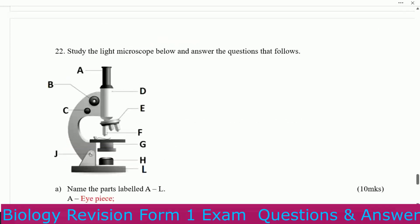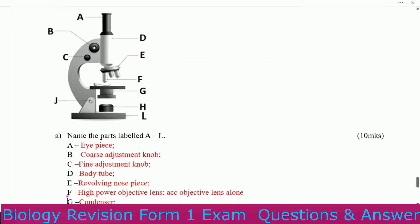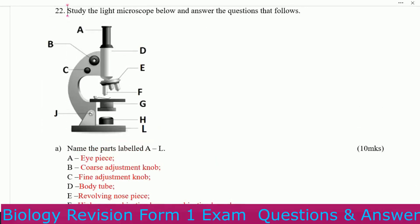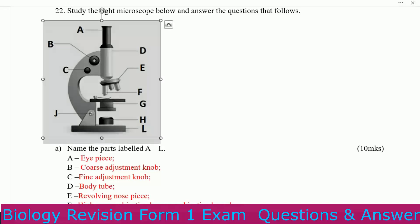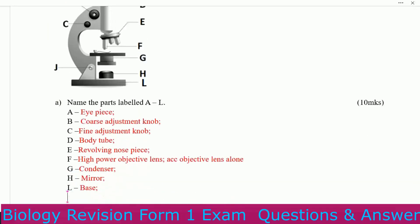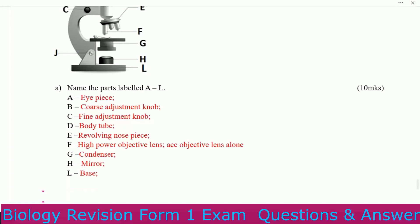Study the light microscope below and answer the questions that follow. You can see it here very clearly. Name the parts labeled A to L. A is eyepiece. B is coarse adjustment knob. C is fine adjustment knob. D is body tube. E is revolving nosepiece. F is eyepiece objective. G is objective lens. H is condenser. I is mirror. L is base.